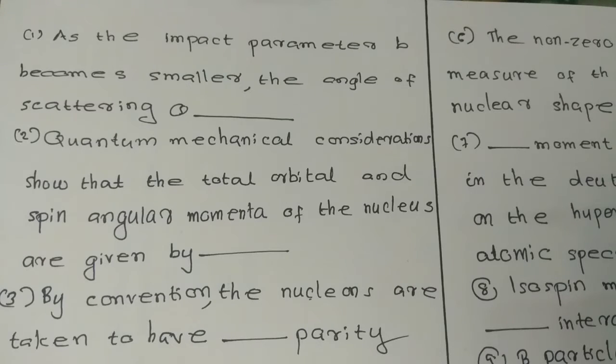As the impact parameter b becomes smaller, the angle of scattering theta is dash.